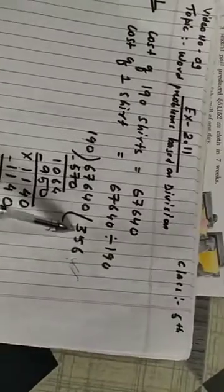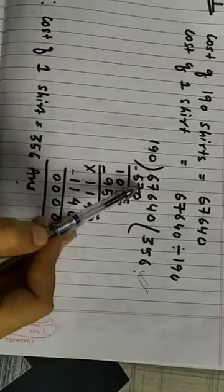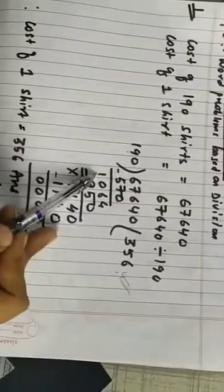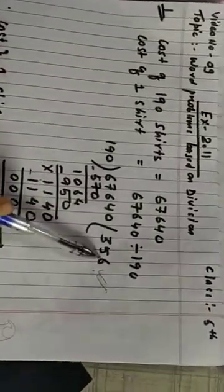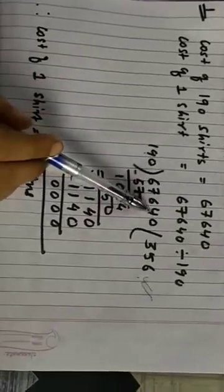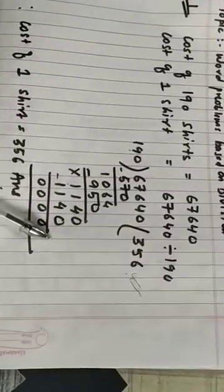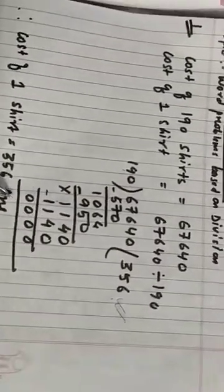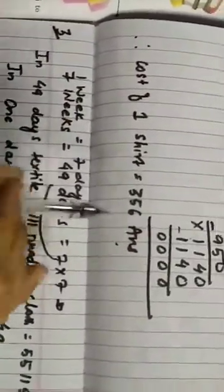Divide: 190 into 3 equals to 570. So 6 minus 0 equals to 6, 7 minus 7 equals to 0, and 6 minus 5 equals to 1. Again we will take one number down — that is 4. So 190 into 6 equals to 950. So 4 minus 0 is 4, 6 minus 5 equals to 1, and 10 minus 9 equals to 1. Again we will take one number down — that is 0. So 190 into 6 equals to 1,140. 1,140 minus 1,140 equals to 0. So the cost of 1 shirt equals to 356 rupees.